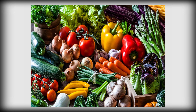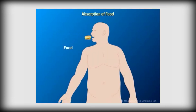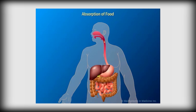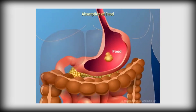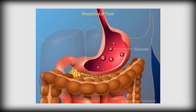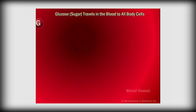Let's see what happens to the food we eat. When food is ingested, it travels through the digestive tract and gets broken down into its complete nutrients. One such nutrient is glucose, a simple sugar. Glucose is absorbed by the stomach and intestine and then enters the bloodstream, traveling through the circulation to all body cells.